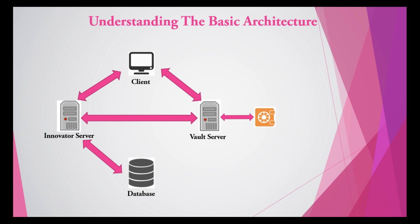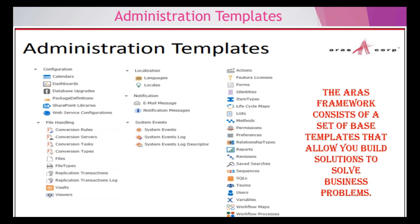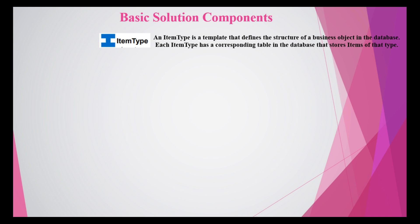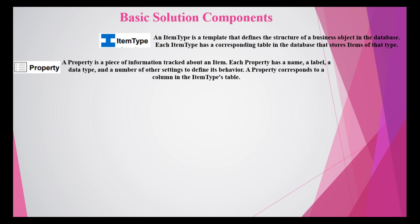Now let's look at the solution components. The first is the Item Type. An item type is essentially a blueprint — everything in RARS is an item type. It is a template that defines the structure of a business object in the database. Each item type has a corresponding table in the database that stores items of that type. So if we create an item type named 'Test', RARS will automatically create a table named 'Test' in the Microsoft SQL Server database.